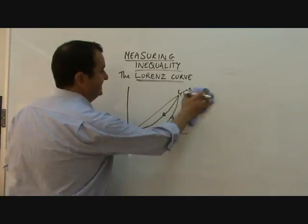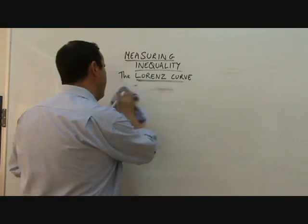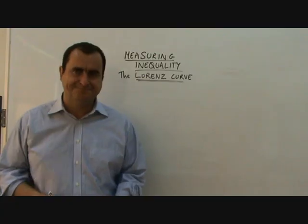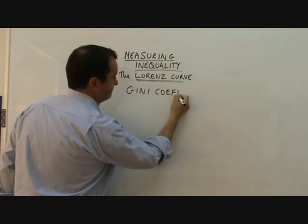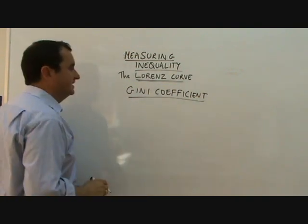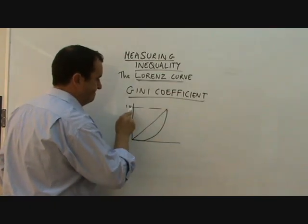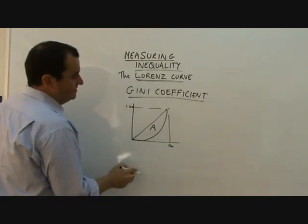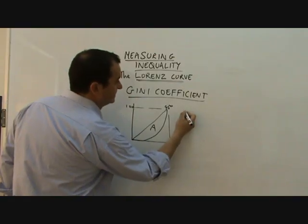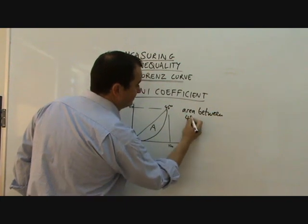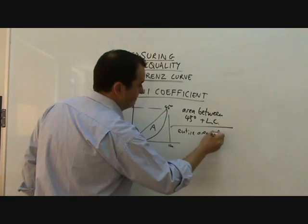If we want to work with real numbers, we can use a technique called the Gini coefficient. The Gini coefficient is a technique which looks at the Lorenz curve and measures area A, which is the area between the 45 degree line and the Lorenz curve, as a proportion of the entire area below the 45 degree line. It's the area between the 45 degree and Lorenz curve, divided by entire area below the 45 degree line.